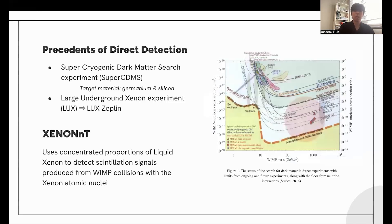The direct detection of WIMPs. Before the Xenon-NT experiment, there have been precedents, of course. The Super Cryogenic Dark Matter Search Experiment, Super C-DMS, used its target material of germanium and silicon, and they identified the crystal lattice vibrations and ionized signals that happened when particles collided with their target material.